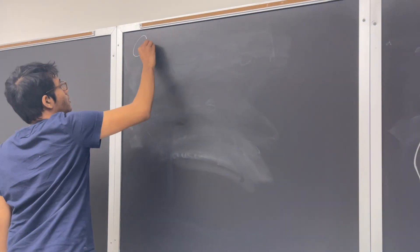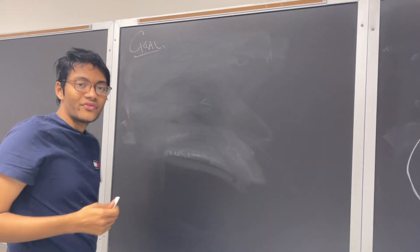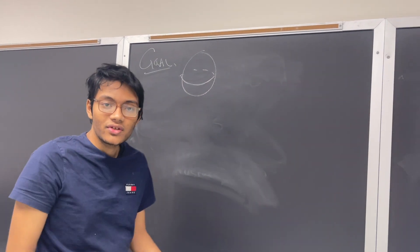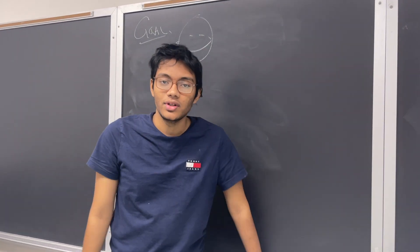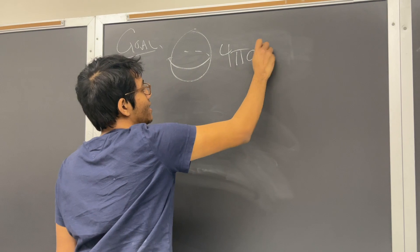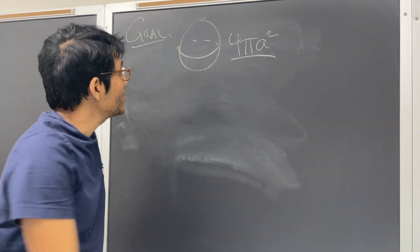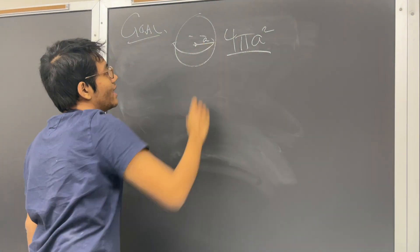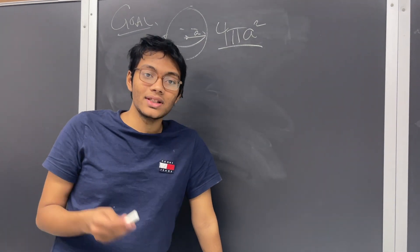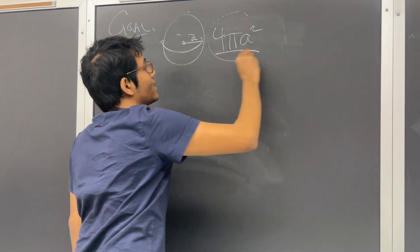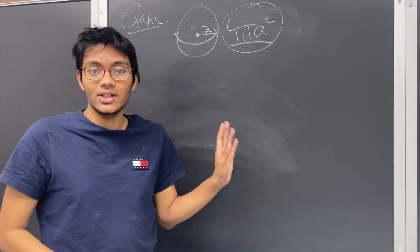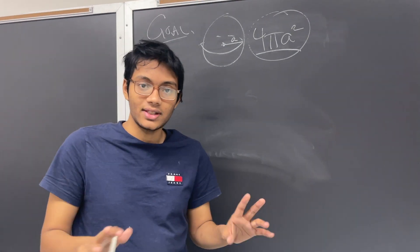So our goal is to find the surface area of a sphere. Here's a sphere and we want to find its surface area using differential equations and vector analysis. Now we know already that the answer should be this. If your sphere has a radius of a, then its surface area should be 4πa². Now the whole point of doing this example is not to figure out what the surface area of a sphere is. No, it's to verify that our method of finding surface area of a general surface works.